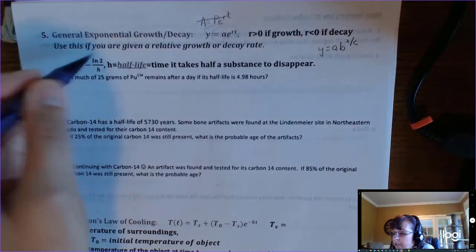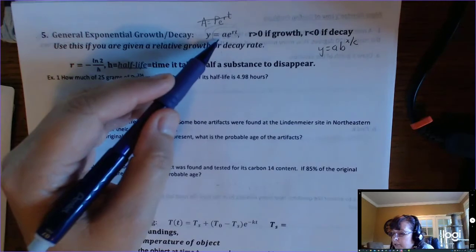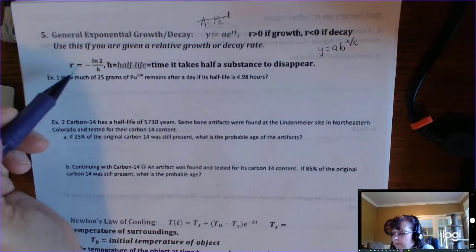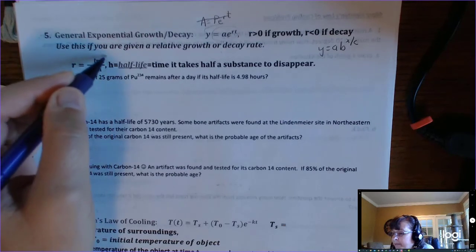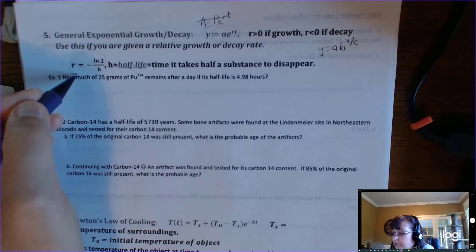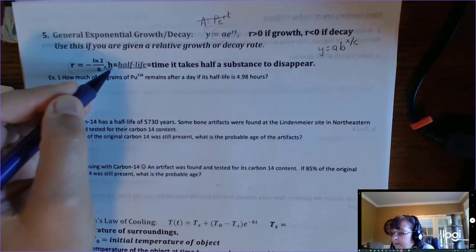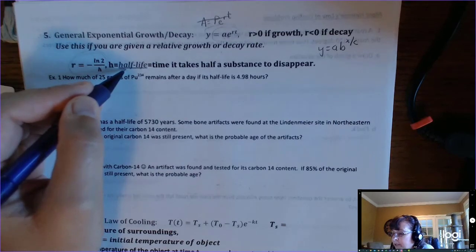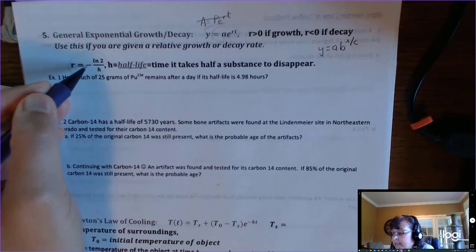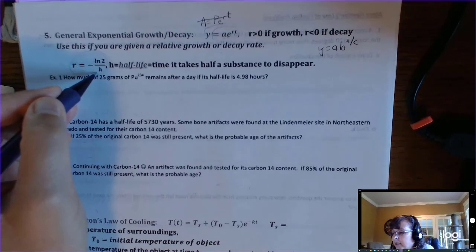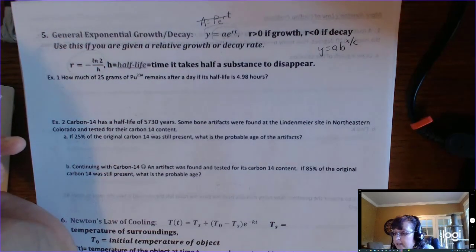So if you wanted to use this problem for half-life, you would have to memorize something, a secondary piece of information here. If H is your half-life period, the time it takes for half a substance to disappear, then R is going to be negative natural log of 2 divided by H.